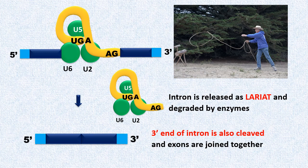Intron is degraded by enzymes and SNRPs are used in other splicing reactions. This whole process of pre-mRNA splicing is repeated for other exons and introns within the primary transcript.